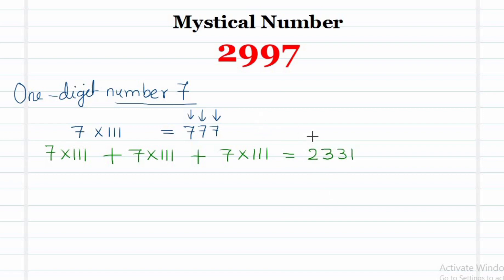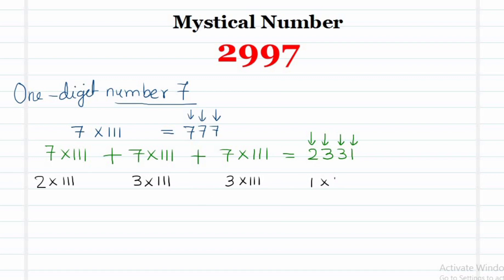What are the digits of 2331? They are 2, 3, 3, and 1 — four digits. Now let us multiply each of these digits by 111: 2 into 111, 3 into 111, 3 into 111, and 1 into 111, and ultimately add all these. This gives us 999.